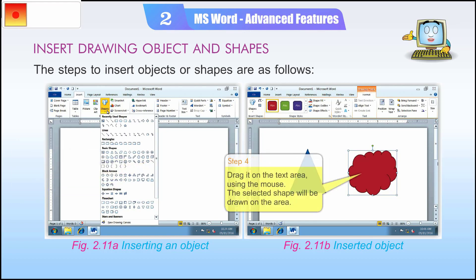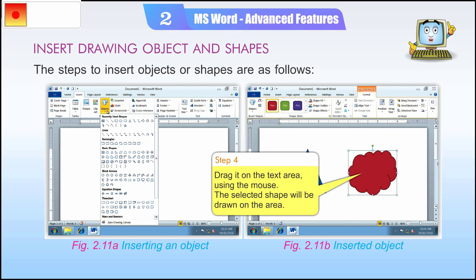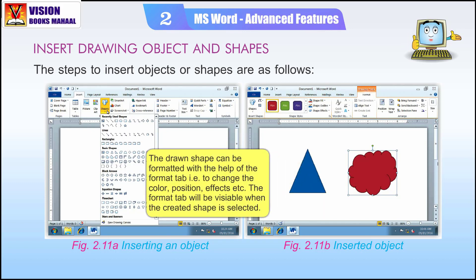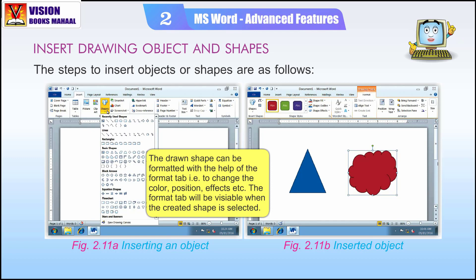Step 4: Drag it on the text area using the mouse. The selected shape will be drawn on the area. The drawn shape can be formatted with the help of the Format tab, i.e., to change the color, position, effects, etc. The Format tab will be visible when the created shape is selected.